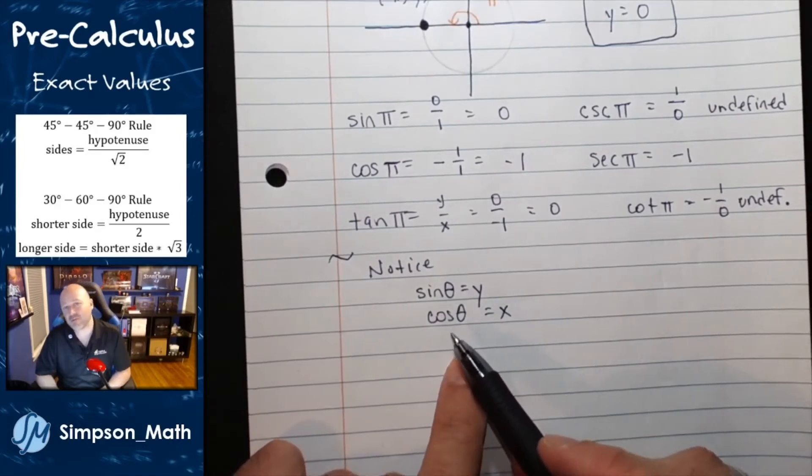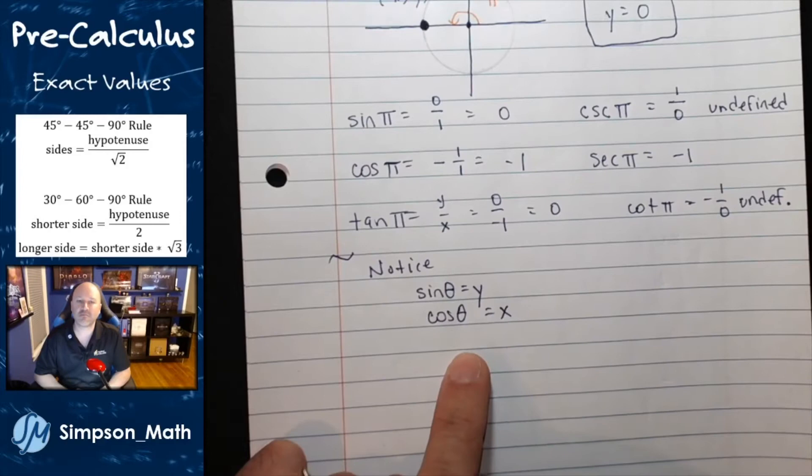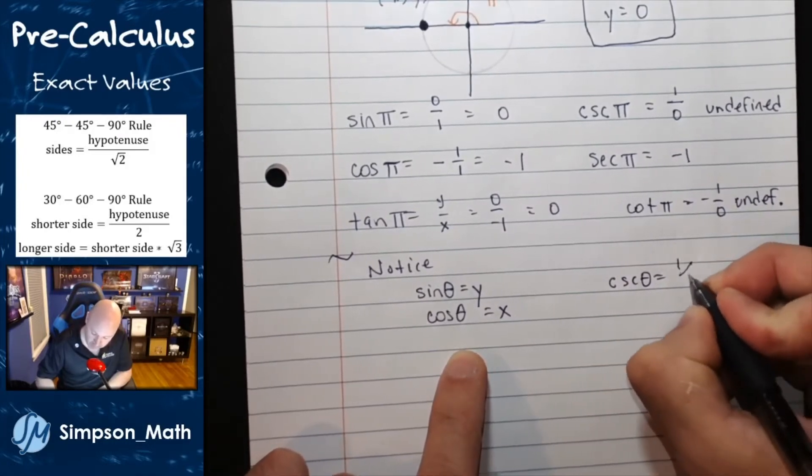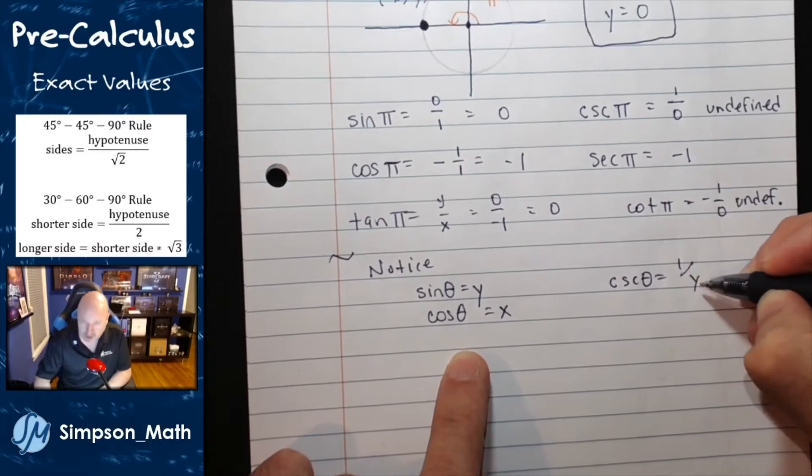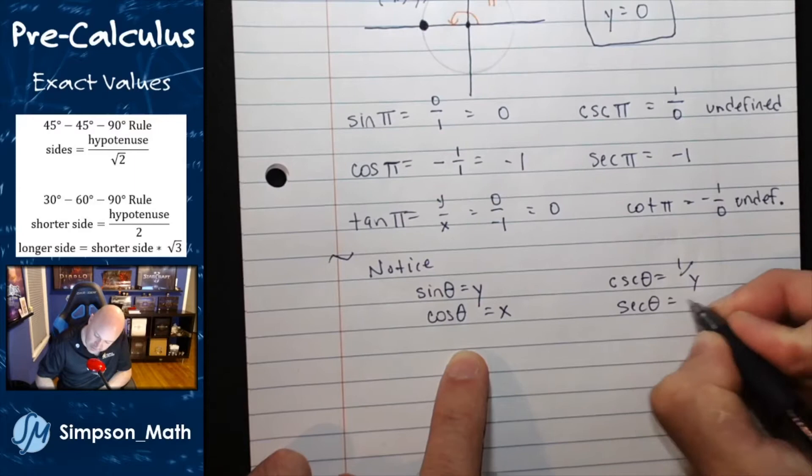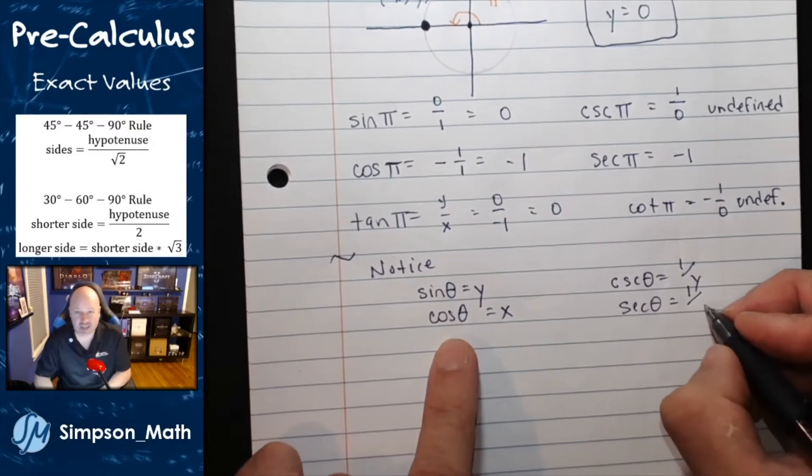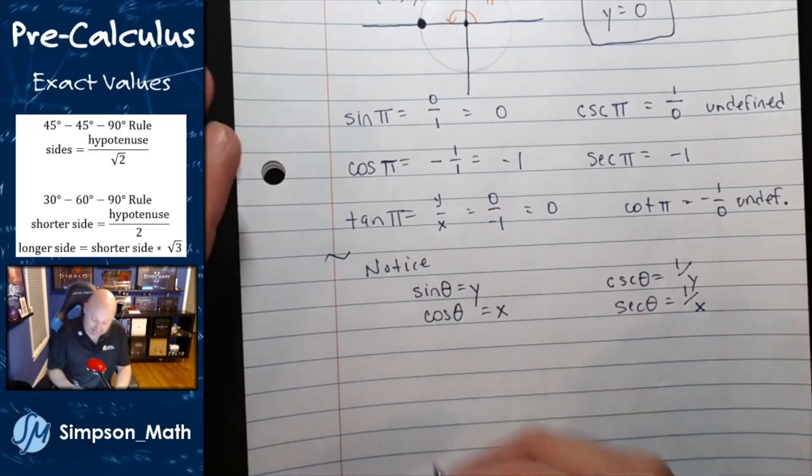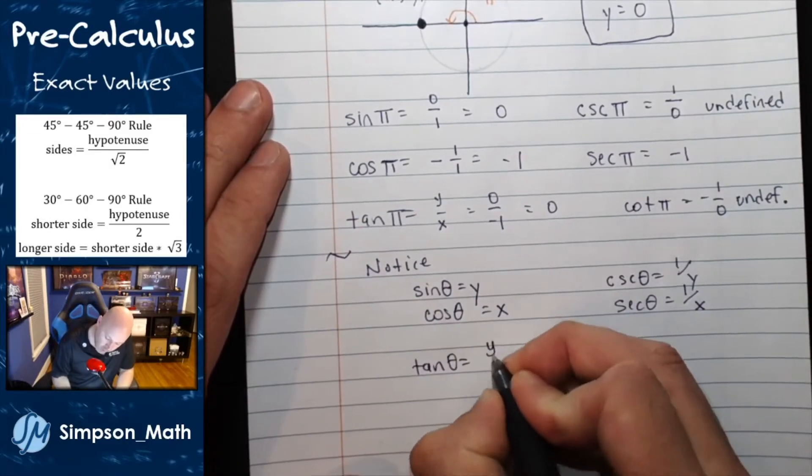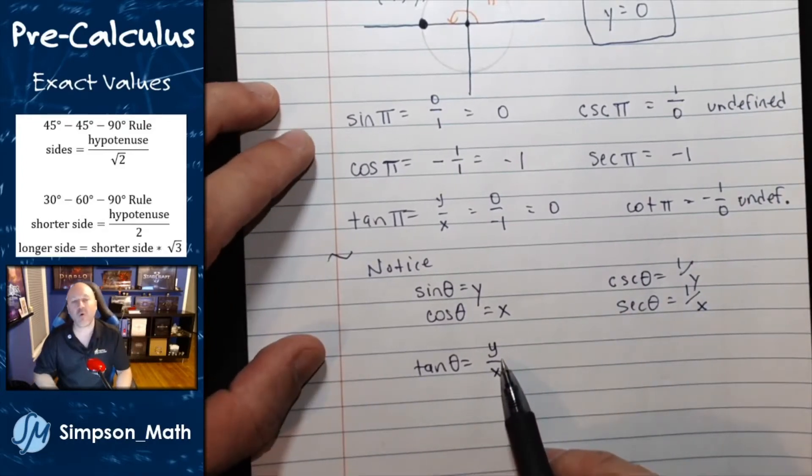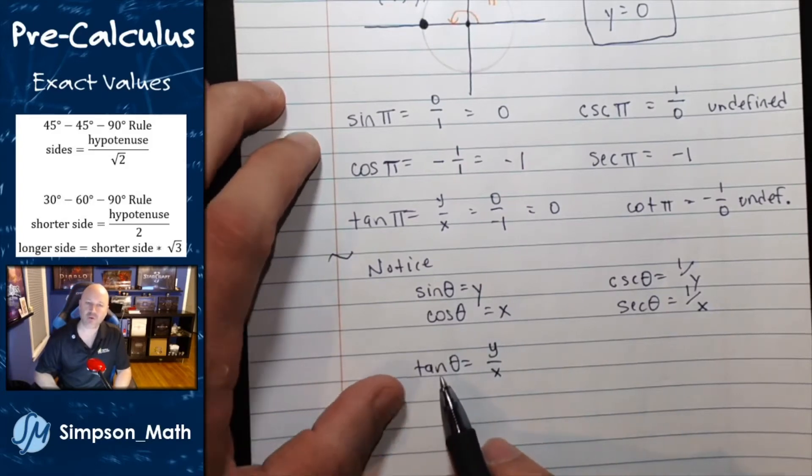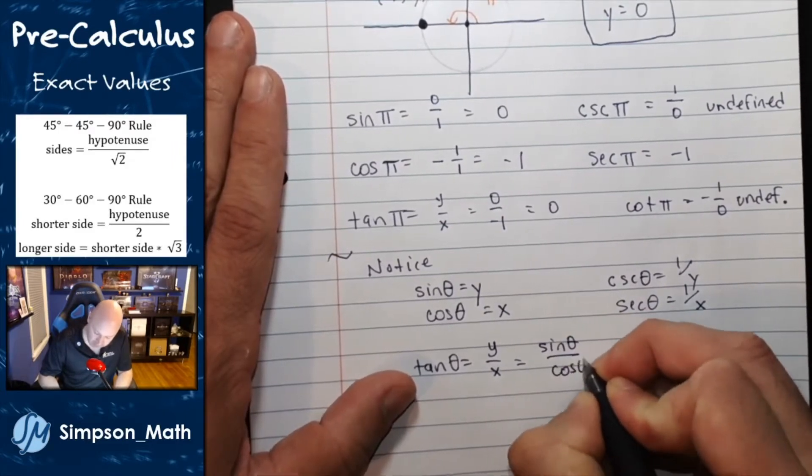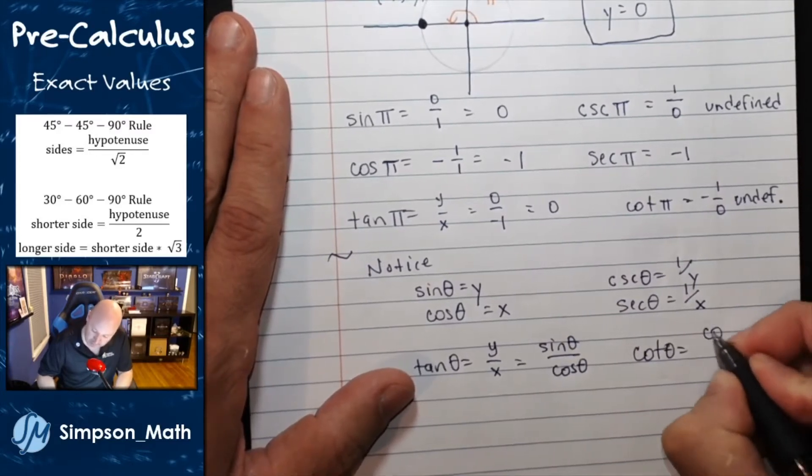So sine is defined as y over r, but if that radius is just going to be 1, then this is a nice translation. And I can do their reciprocals similarly. Cosecant of theta would be 1 over y. Basically, it's just the reciprocal of y. And secant is the reciprocal of cosine, but cosine is just x. So 1 over x. Now tangent is defined as y over x, but we just said y is sine and x is cosine. So I feel comfortable saying tangent is equivalent to sine over cosine. Cotangent, it's reciprocal, similarly would be cosine over sine.